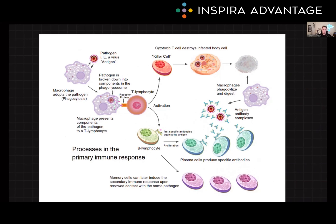The adaptive immune system, however, is responsible for providing specific and long-lasting immunity against pathogens. It is activated when the innate immune system is unable to clear an infection. Cytotoxic immunity is one of the two main branches of the adaptive immune system, the other being humoral immunity.